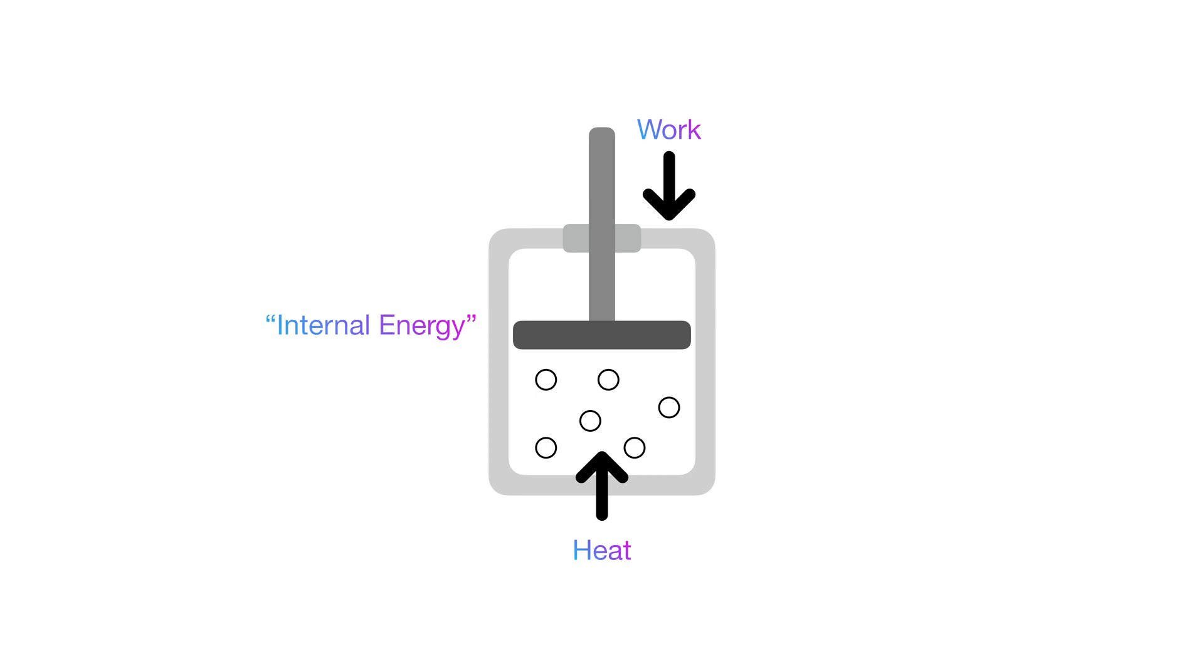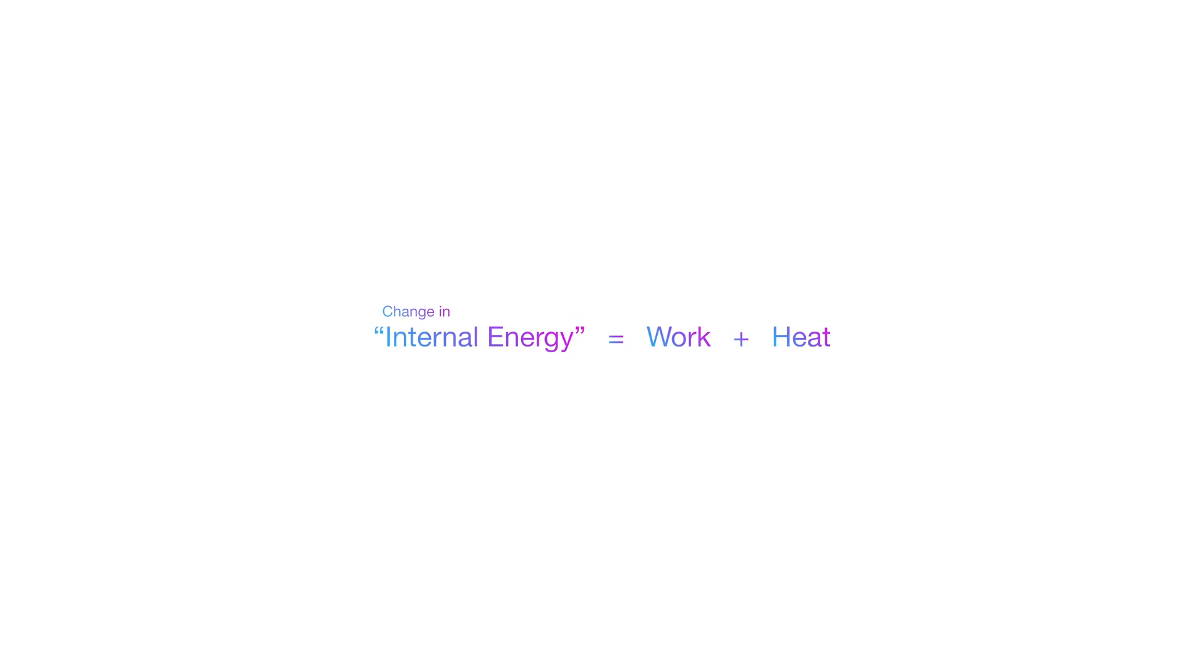And for now, this internal energy is just a reflection of the gas's temperature. However, it can also mean a multitude of things for more complicated systems, so just keep that in mind for now. And in general, for any system, we can turn this statement into a mathematical equation. The change in internal energy is equal to the sum of work and heat, or delta U is equal to Q, heat, plus W, work.